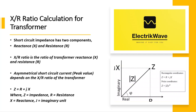Short circuit impedance has two components: reactance X and resistance R. X by R ratio is the ratio of transformer reactance X and resistance R. Asymmetrical short circuit current peak value depends on the X by R ratio of the transformer. Z equals R plus jX.